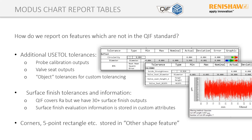The last category with interesting challenges is other shape features — corners, five-point rectangles, and other feature types that don't fit within typical features measured by these devices. There's an option in the standard called 'other shape feature,' and for that we could put the information we needed. That leads nicely into the next topic: while I've explained how to get report tables to work, I haven't yet mentioned anything about plots.